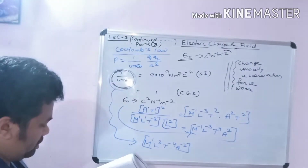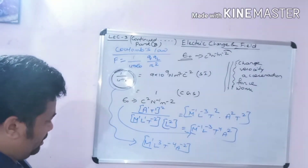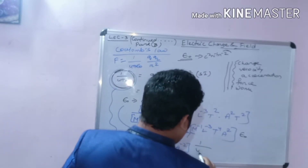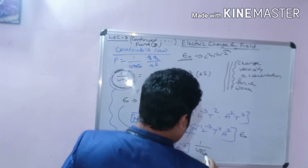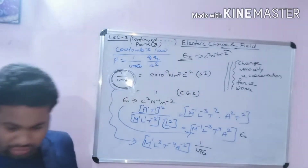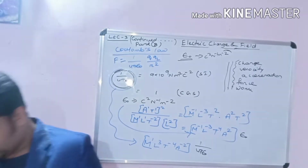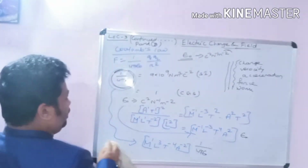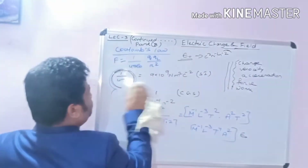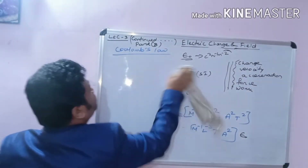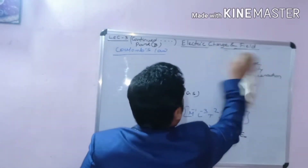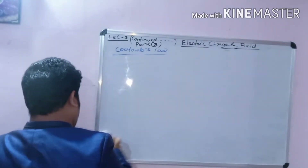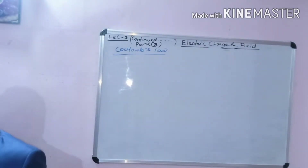The dimensional formula of 1 by 4 pi epsilon-0 is simply the opposite: M1, L3, T minus 4, A minus 2. So epsilon-0 dimension is M minus 1 L minus 3 T4 A2, and 1 by 4 pi epsilon-0 dimension is M1 L3 T minus 4 A minus 2.